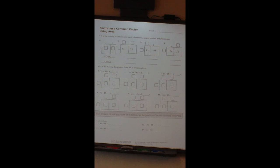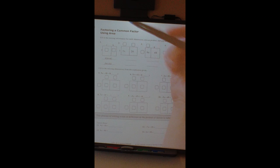Alright, so this sheet is called factoring a common factor using an area. So it gives you boxes to help you understand what numbers were multiplied together to give you the distributive property.